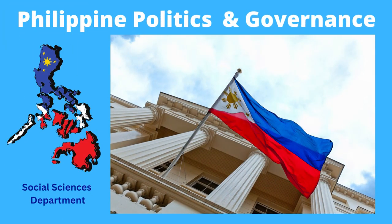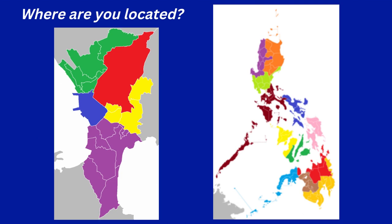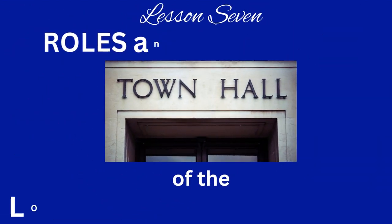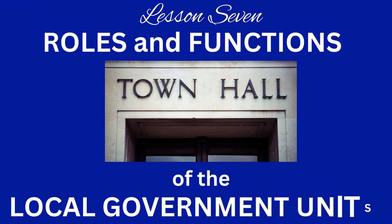Good day, senior high school students. Here is now your lesson number 7. But first, take a look at the maps. Where do you think you are located? The title of our lesson is Roles and Functions of the Local Government Units.